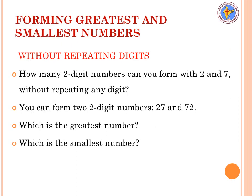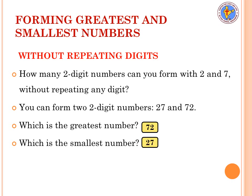Next we will learn how to write the greatest and smallest number without repeating digits. Two digits are given: 2 and 7. Without repeating any digit, you can form two two-digit numbers: 27 and 72. Out of these, the greatest number is 72 because in the tens place 7 is bigger than 2. The smallest number is 27.